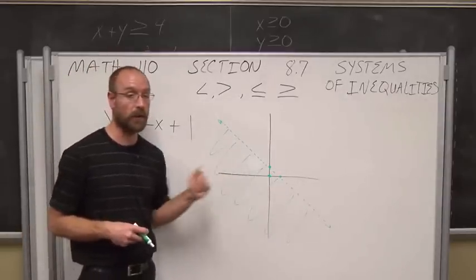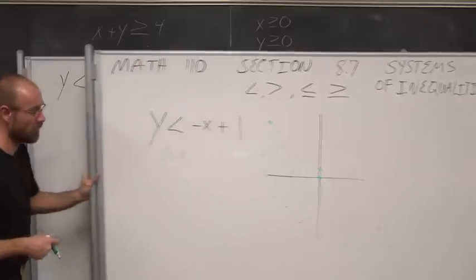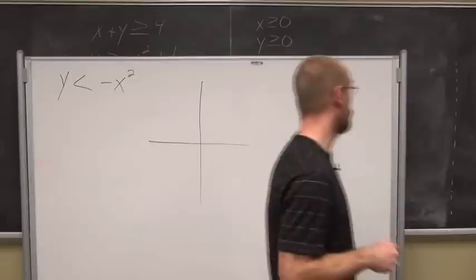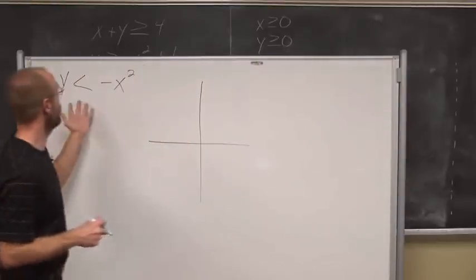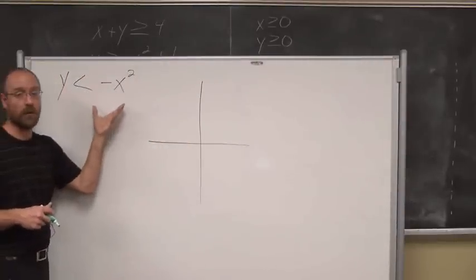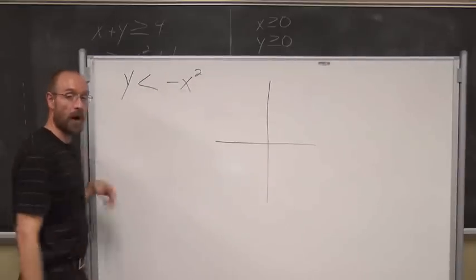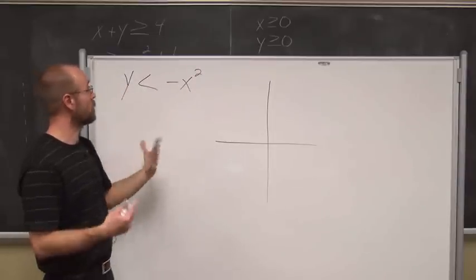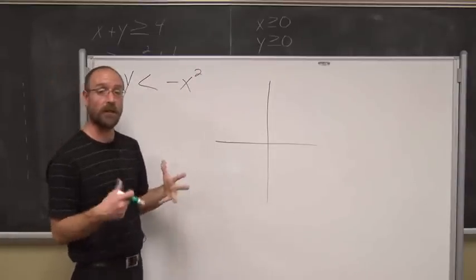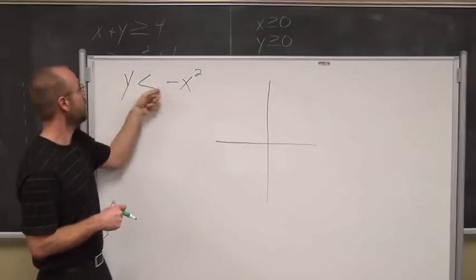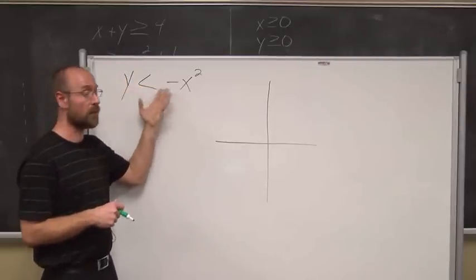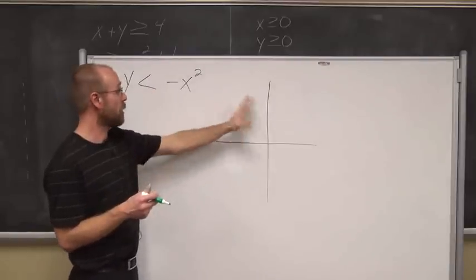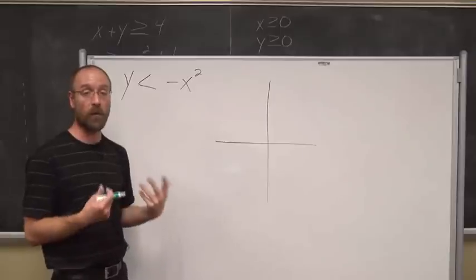Hopefully we remember how to do this with linear equations, because now we're going to do the exact same thing with nonlinear equations. If this was an equal sign, hopefully we'd recognize it to be a parabola that opens down. A parabola that opens down — the first thing I want to do is identify what type of line: solid or dashed. I see this is only a less than, so we're going to divide the graph using a parabola instead of a line.